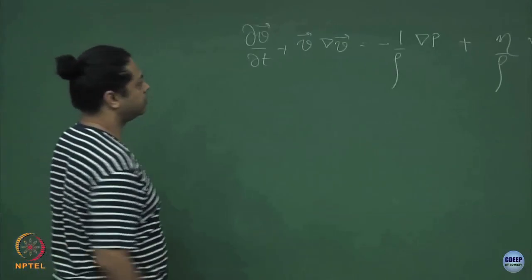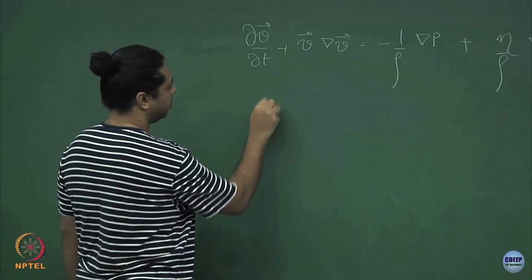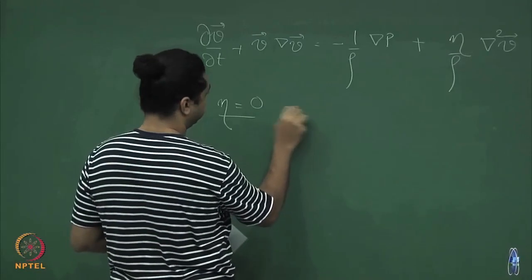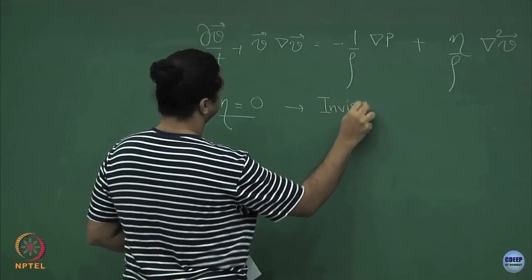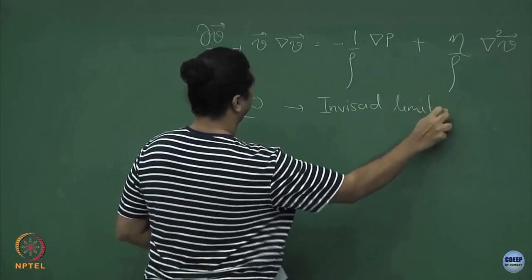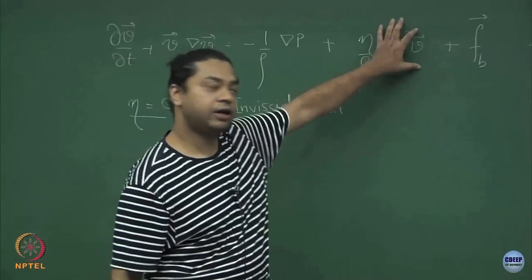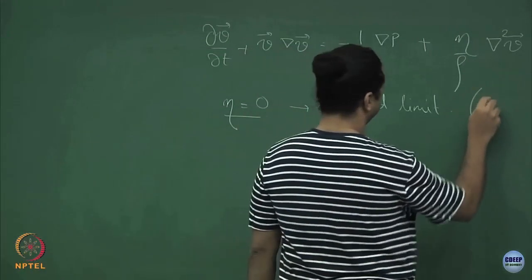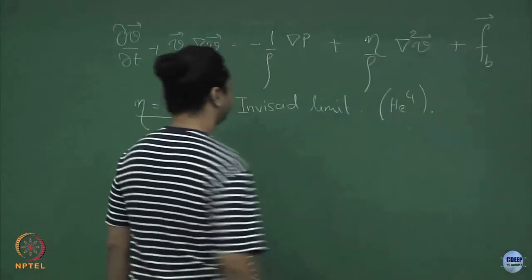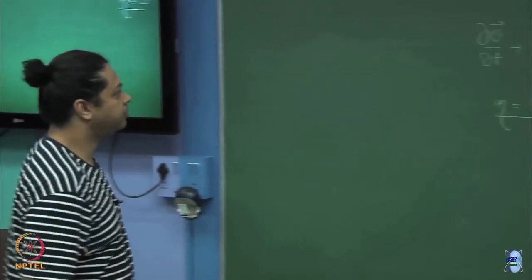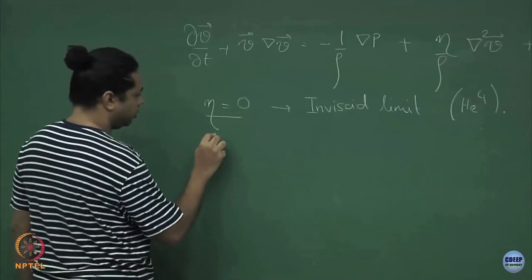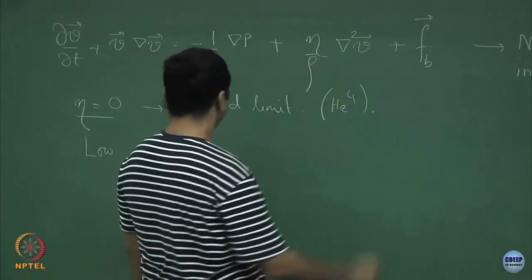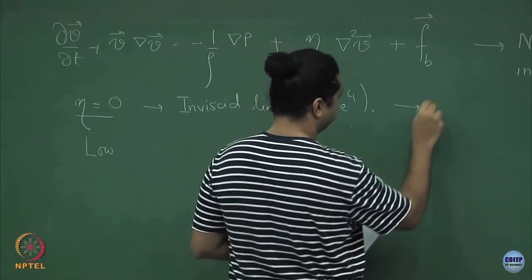One of the limits of this equation is when you have a fluid with no viscosity. So eta equals 0 — this is called the inviscid limit. This term drops out, and things like superfluid helium come under this limit. Once we have taken out eta, this is called the Euler equation.